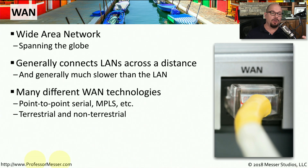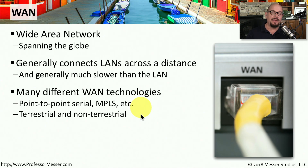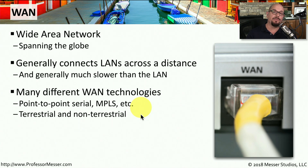There are many different ways to connect over a wide area network. You could be using point-to-point serial connections or MPLS connections. It's common to have those types of connections be fiber or copper that's in the ground, going from your location to another location somewhere else. This could, of course, be using non-terrestrial communication. It's common to have wide area connections using satellites, where you send all of your data to a satellite, and it communicates back down to a ground station, and then reverses that process to get back to you.